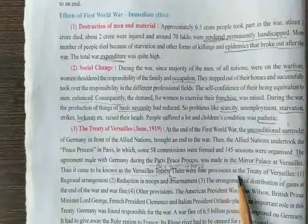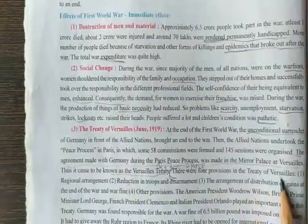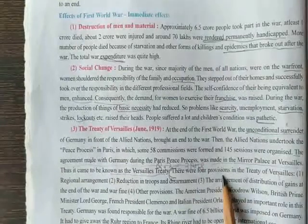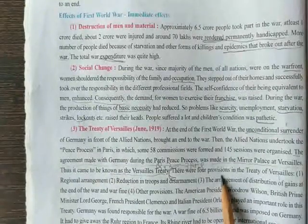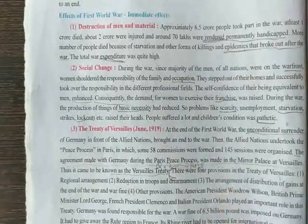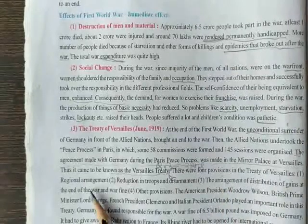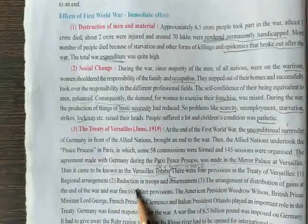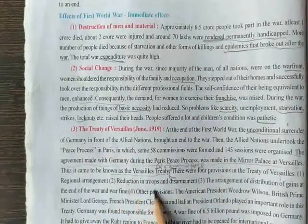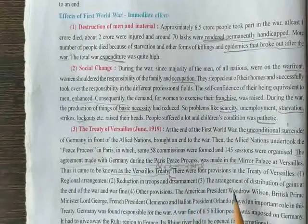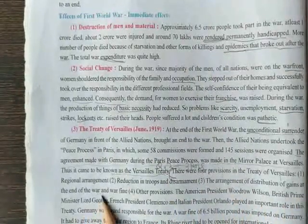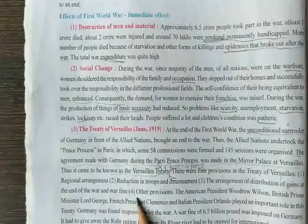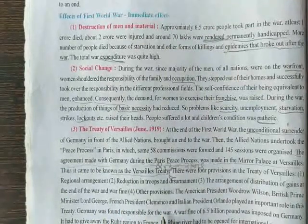There were four provisions in the Treaty of Versailles: first, Regional Arrangement; second, Reduction in troops and disarmament; third, the arrangement for distribution of gains at the end of the war; and fourth, war fine and other provisions.